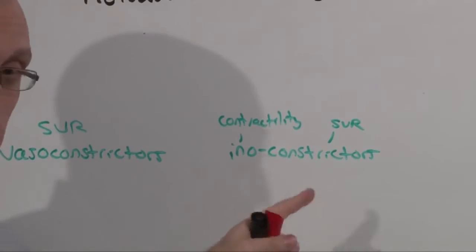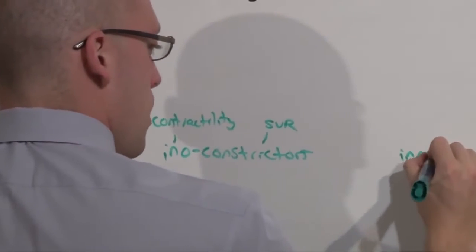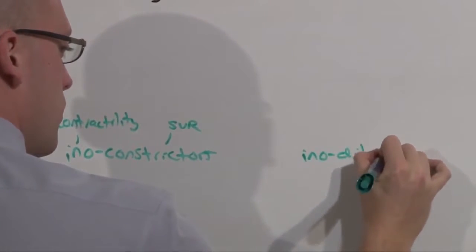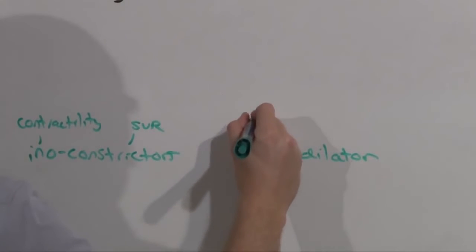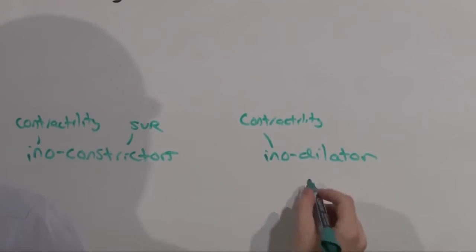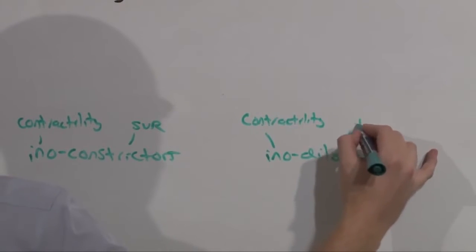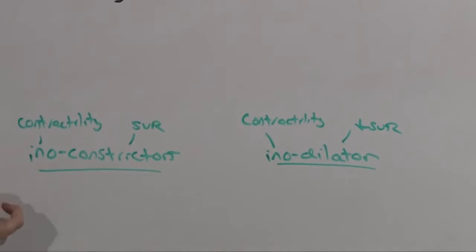The third classification, and you'll see why I call it innoconstrictor, is innodilator. An innodilator is going to provide lots of contractility, but being a dilator is actually going to drop systemic vascular resistance.